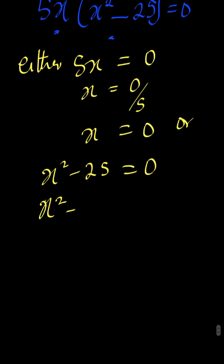This can be written as x² minus 5² equals 0. So we have x minus 5, this is a difference of two squares, times x plus 5 equals 0.